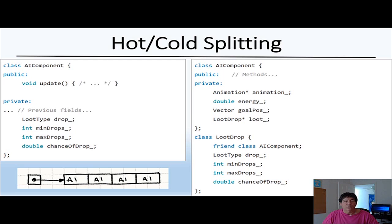The last thing I'd like to mention is called hot cold splitting. On the left we have this AI component object and notice it's got the loop type, min drops, back drops, chance of - it's got all the data for the AI component.